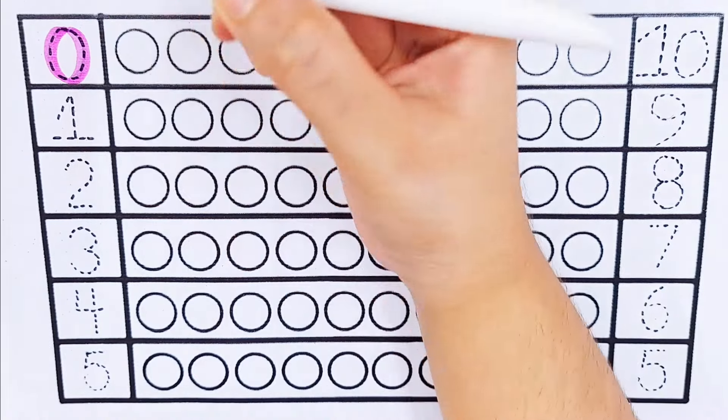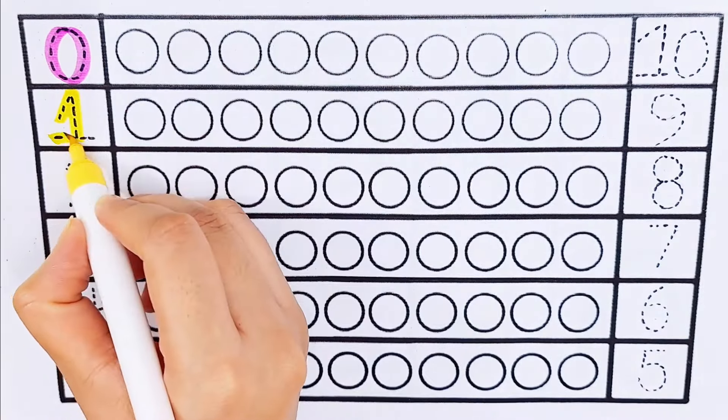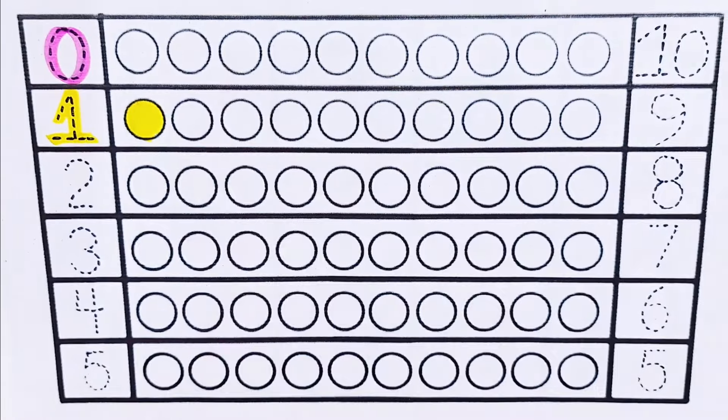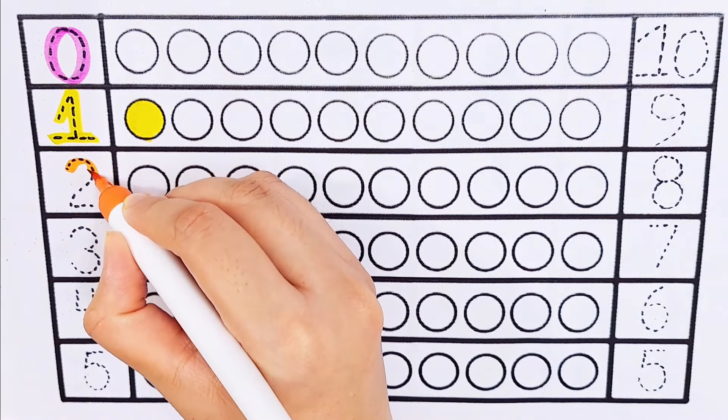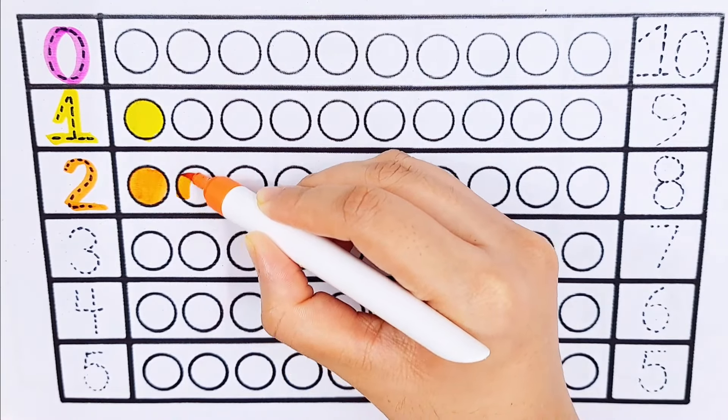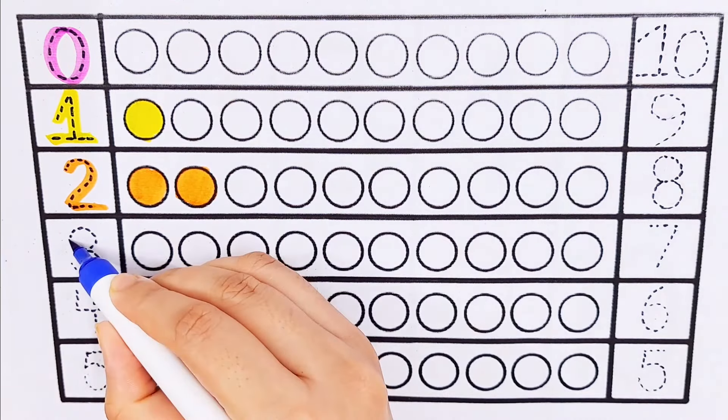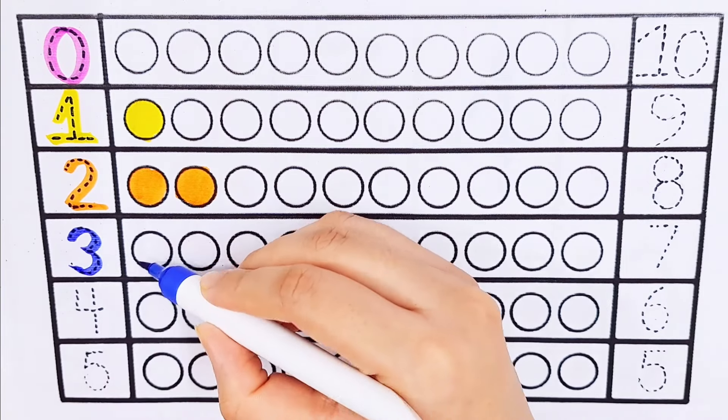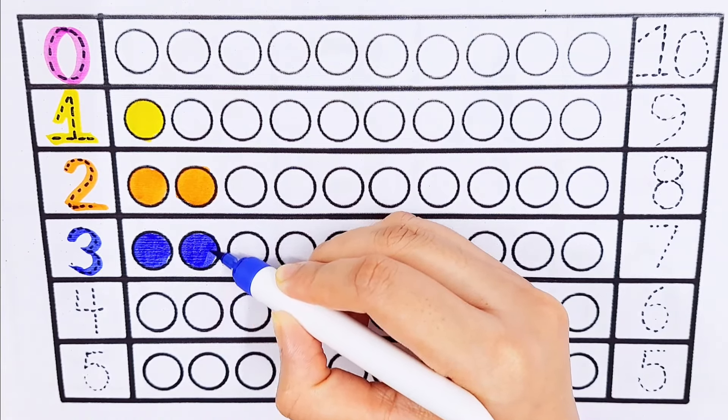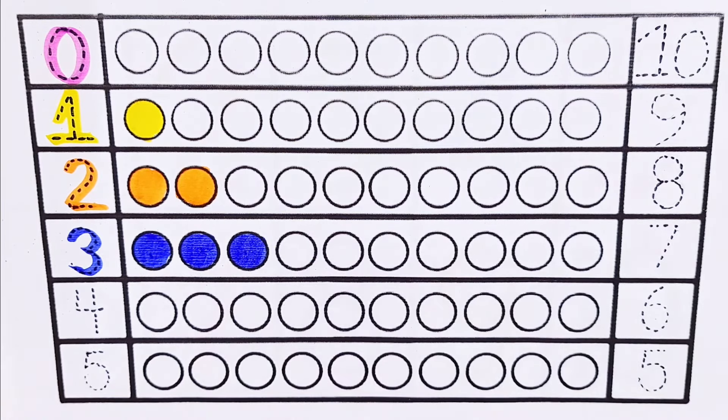0 balls. Number 1: 1 ball. Number 2: 2 balls. Number 3: 1, 2, 3. 3 balls.